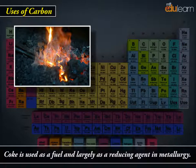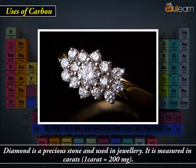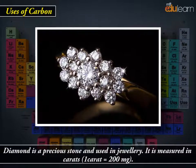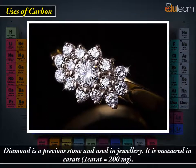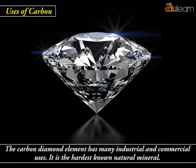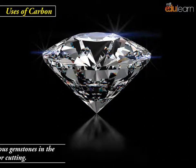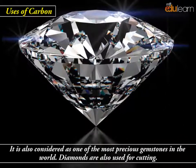Coke is used as a fuel and largely as a reducing agent in metallurgy. Diamond is a precious stone and used in jewellery. It is measured in carats — 1 carat is equal to 200 mg. The carbon diamond element has many industrial and commercial uses. It is the hardest known natural mineral and is also considered one of the most precious gemstones in the world.